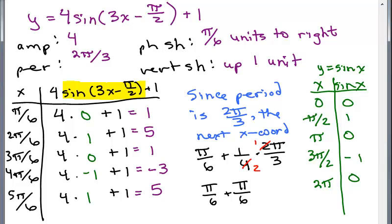So now we've got 5 key points: (π/6, 1), (2π/6, 5), (3π/6, 1), (4π/6, −3), (5π/6, 1). I always suggest plugging one of these x-coordinates back into the original function to verify. For instance, 3π/6 equals π/2, so plug π/2 in for x, simplify the parentheses, take the sine, multiply by 4, add 1 — and you should get 1. Now we're ready to graph.